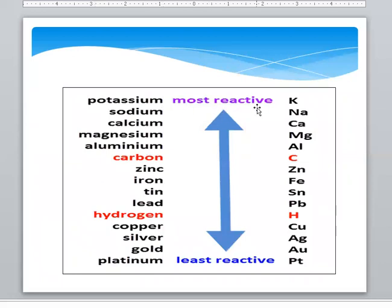Most reactive to least reactive. For example: potassium, sodium, calcium, magnesium, aluminum. They are from the 1A, 2A, and 3A groups. These are the highly reactive elements.